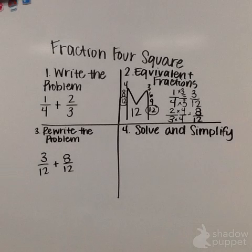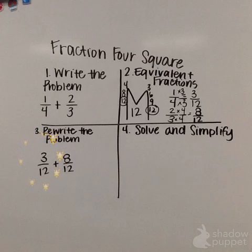So after I've found my common denominators and found my equivalent fractions, I'm going to rewrite my problem. One-fourth changed to three-twelfths and two-thirds changed to eight-twelfths. So now I have three-twelfths plus eight-twelfths.